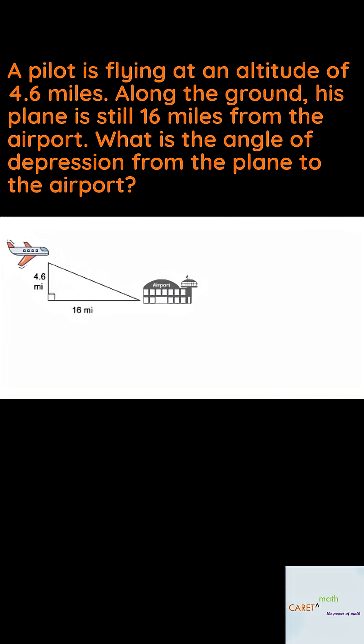Now here you have a pilot flying at an altitude, which is the same thing as height, of 4.6 miles. Along the ground, the bottom or one of the legs of your right triangle, the plane is 16 miles from the airport. So we want to know what's the angle of depression from the plane to the airport.